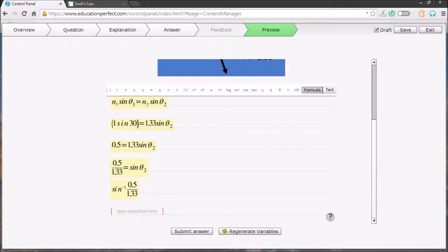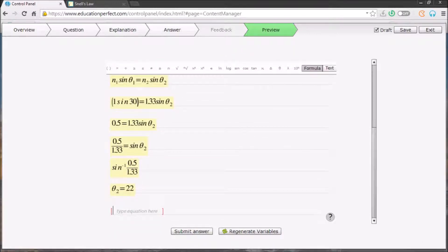Okay, and this is equal to the unknown angle. So theta 2, after we've gone through all that algebra, comes out as 22 degrees. So I'll just write theta 2 equals 22.